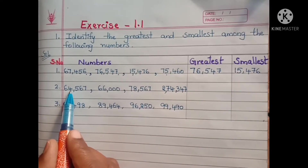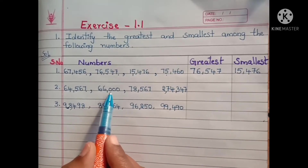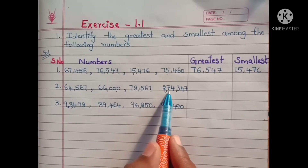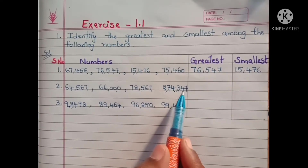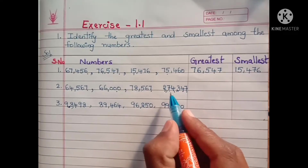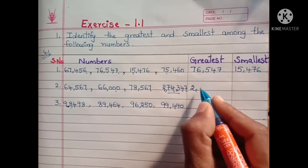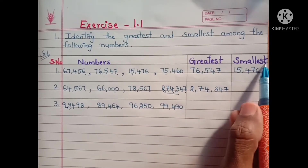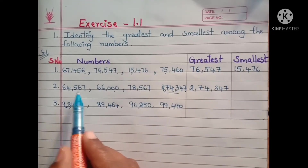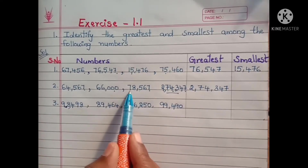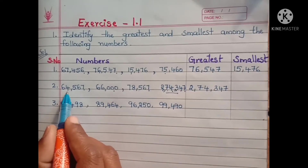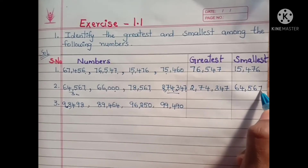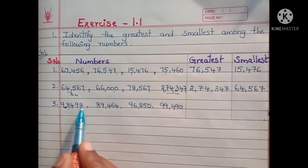Next, the second problem. I'll read out the numbers: 64,567; 66,000; 78,567; and 2 lakhs 74,347. Since 2 lakhs is given, this one is the greatest number, so I'm writing here: 2 lakhs 74,347. For the smallest, among 64,000; 66,000; and 78,000, the smallest is 64,567.